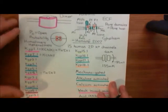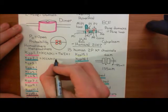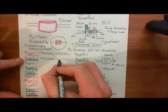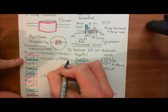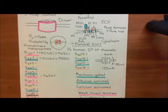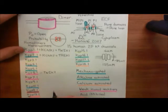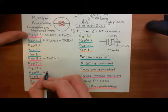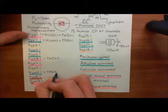The most heavily studied of all the two pore-domain potassium channels is a TREK channel. K2P2.1 is called TREK1, and this one is easily the most studied of all of the potassium channels. There is then also a TREK2 channel, and this is K2P10.1 - so K2P10.1 is also called TREK2.